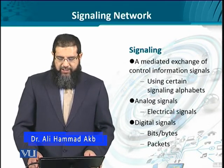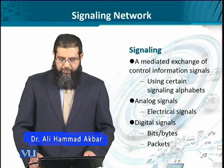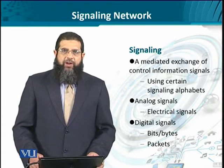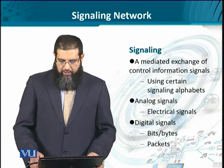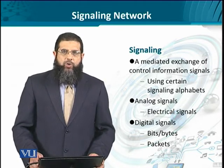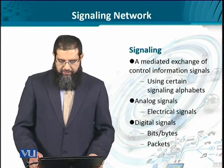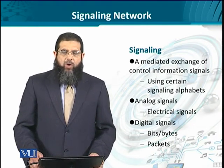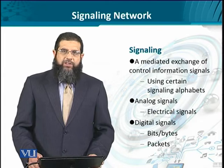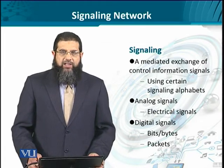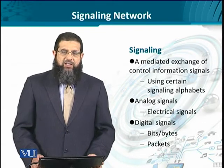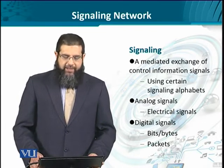Signaling is essentially an exchange of control information. This control information is shared between the interested parties which realize the call. We can think of these control signals as special alphabets which are understood in exactly the same manner between the two parties. These signals could be either analog or digital. The analog signals are mostly voltages in the form of electrical signals, while the digital signals are usually exchanged between network elements in the form of bits and bytes, packets and messages.